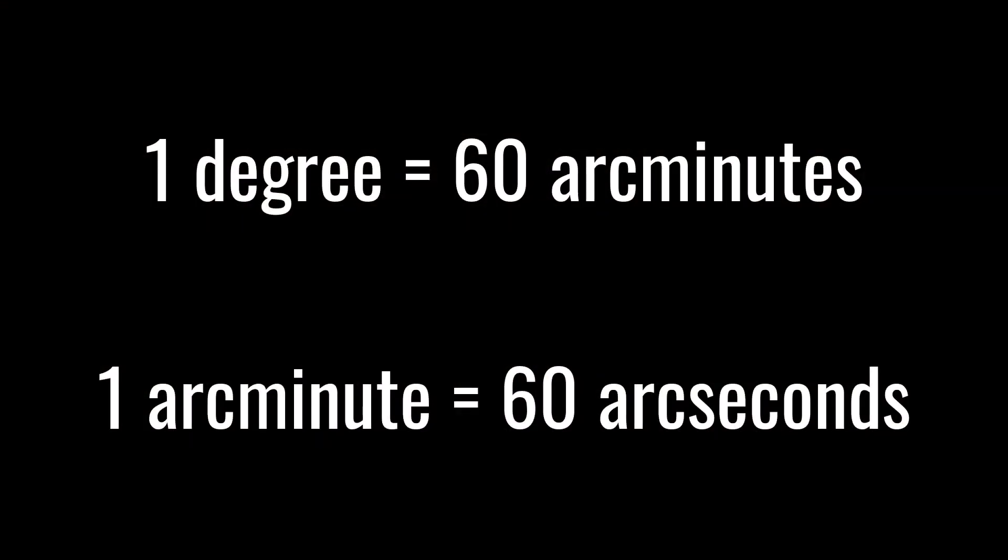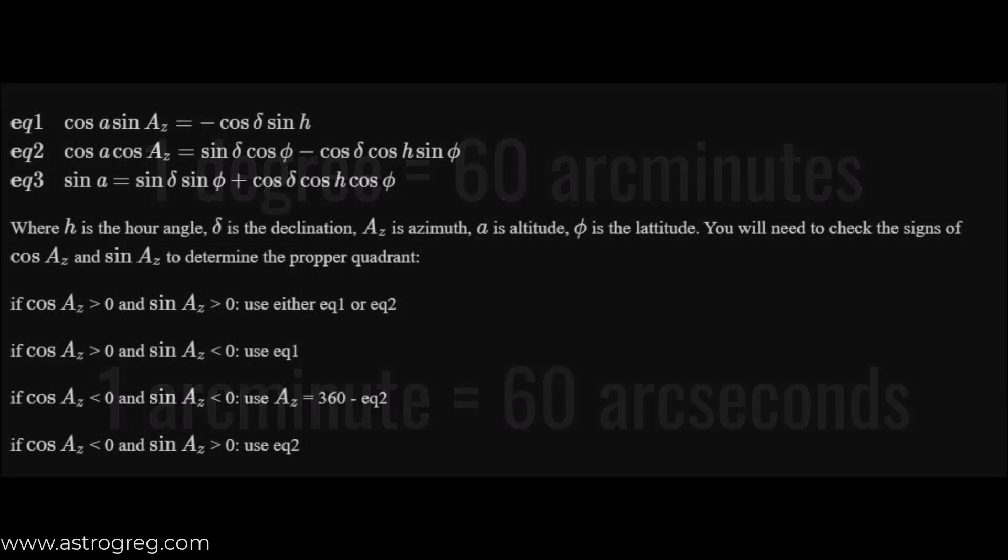Also if you don't already know there are 60 arc minutes in a degree and 60 arc seconds in an arc minute. There is also a way to convert between altitude azimuth and right ascension declination using these complicated formulas showing on screen now however I wouldn't bother memorizing them or even using them as they're tedious long and honestly quite boring. Just use an online calculator or plug them into a computer controlled telescope to make your telescope look at the correct part of the sky.